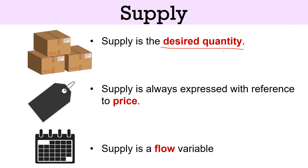Supply is always expressed with reference to price — that is, with a change in the price of the commodity, the supply also changes. Supply is a flow variable, meaning it is the amount of product which a supplier is willing to offer for sale during a particular period of time — that is a day, a week, a month, or a year.